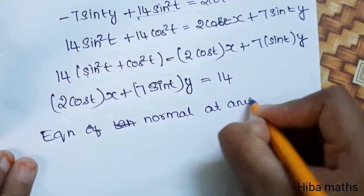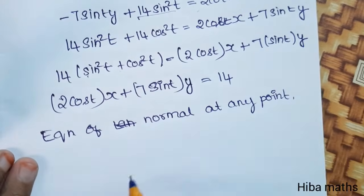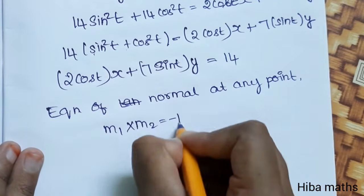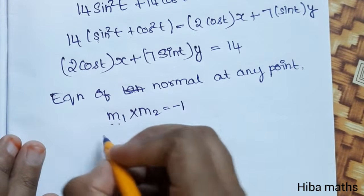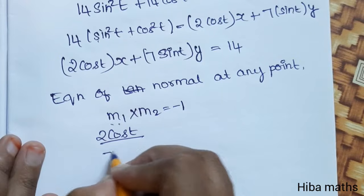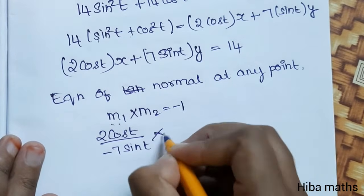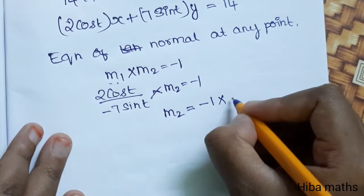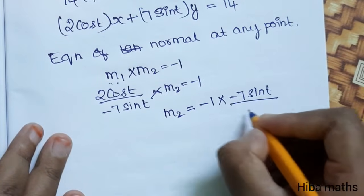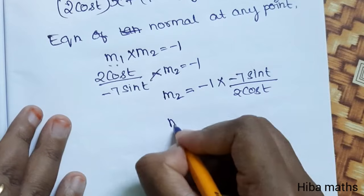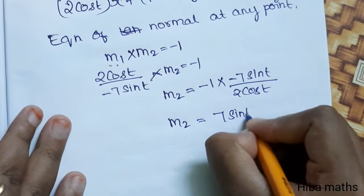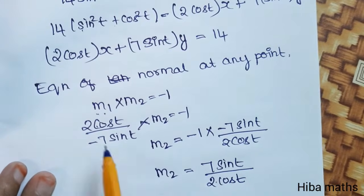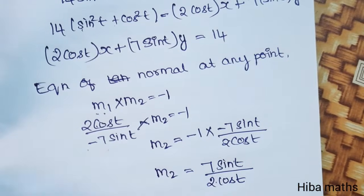Now the equation of the normal. At any point, the normal is perpendicular, so m1 into m2 equals minus 1. With m1 equal to 2 cos t over minus sin t, we get m2 equals 7 sin t over 2 cos t.